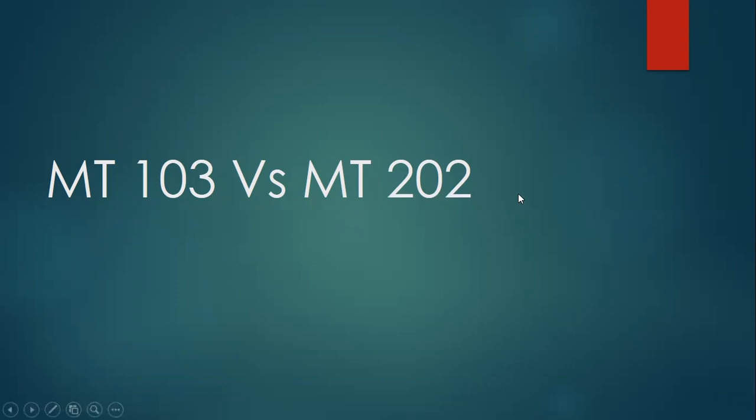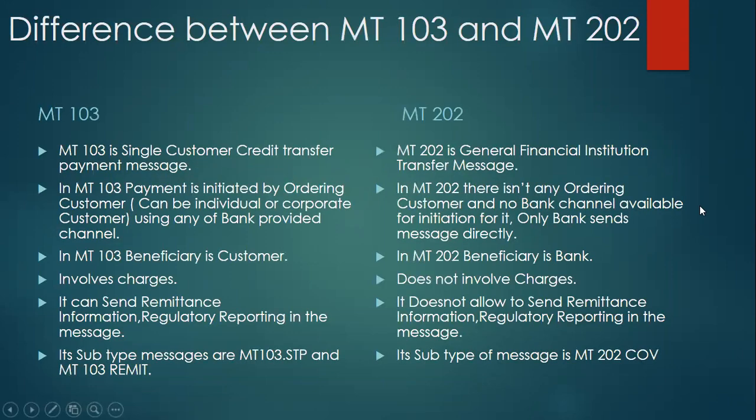First, let's understand MT103. MT103 is a single customer credit transfer payment message. Basically, there is a customer — which can be an individual or a corporate customer — who can initiate the transaction to another customer, who is also an individual or a corporate customer. For example, a company in France like Saint-Gobain can send a payment to a normal customer like you or me, or directly to a corporate customer like Reliance Industries.